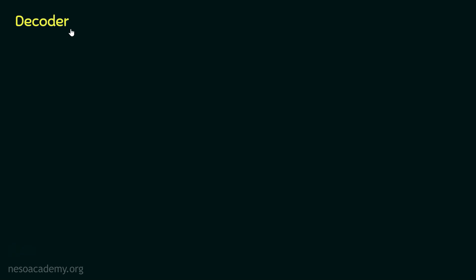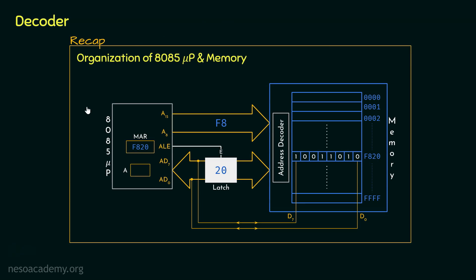Now coming to decoder, we already have seen where it is used. If you remember, in the organization of the 8085 microprocessor and the memory, within the memory we have got the address decoder. Now in the previous session, we learnt about the encoders, right? And if you remember, I told you the encoders are used to reduce the number of lines in a digital circuit. Whereas using decoder, we actually can increase the number of lines in a digital circuit.